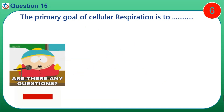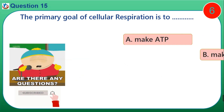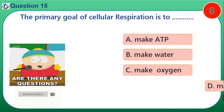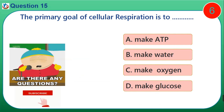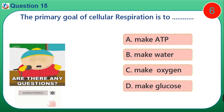Question 15. The primary goal of cellular respiration is to dash. A. Make ATP. B. Make water. C. Make oxygen. D. Make glucose.